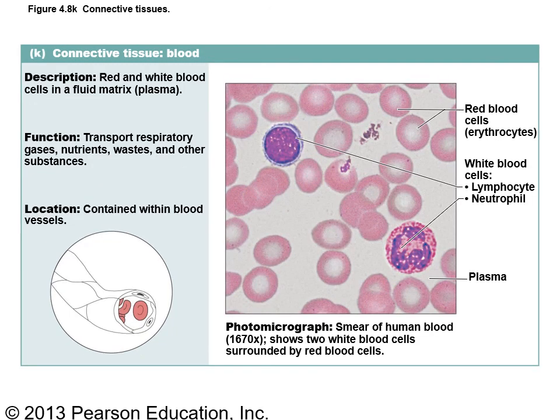The last group under connective tissue is blood, the only tissue in the body that exists in liquid form. It's involved in transportation of substances. A blood smear shows red blood cells, white blood cells such as lymphocytes and neutrophils, and platelets. The stem cells are called hemocytoblasts or hemopluripotential cells. We'll spend a full chapter on blood in A&P2.